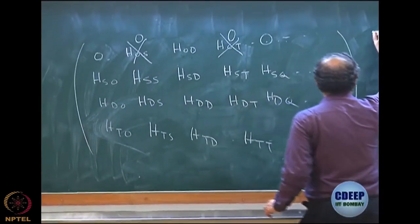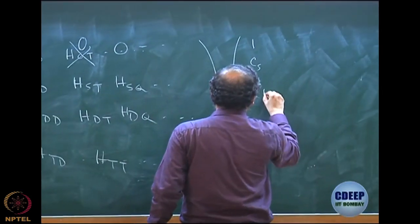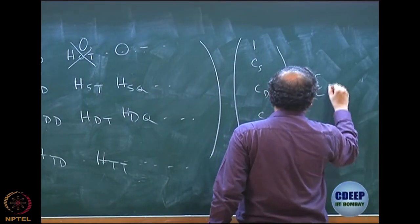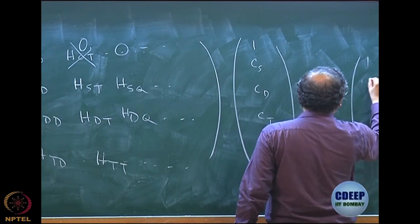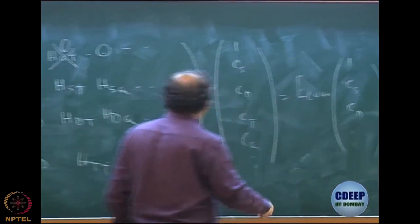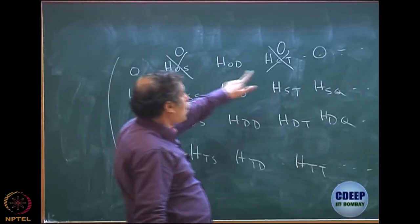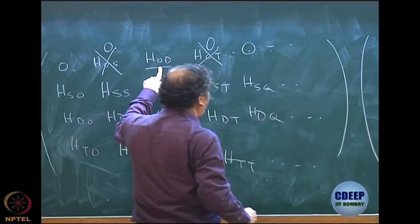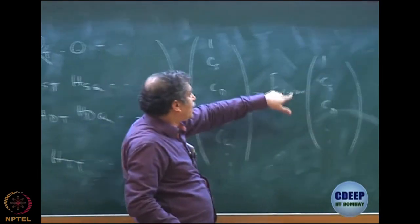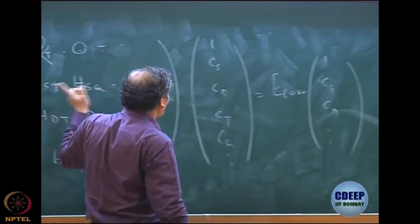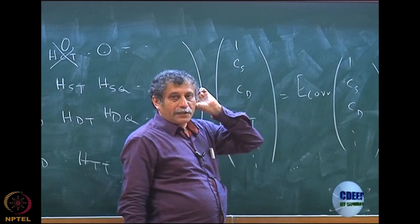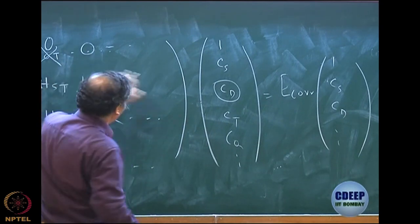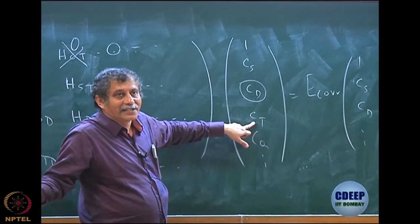The eigenvalue equation is H times [1, Cs, Cd, Ct, ...] equals E_corr times [1, Cs, Cd, ...]. When we multiply the first row times the first column, since everything is zero, the only surviving term is H_doubles,0 times Cd, giving E_corr times 1. So E_corr depends only on Cd. The block H₀t multiplies Ct, but that block is zero by Slater rule — remember these are block multiplications, not scalar multiplications.